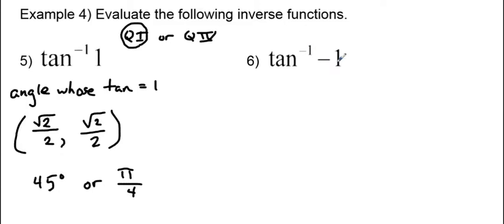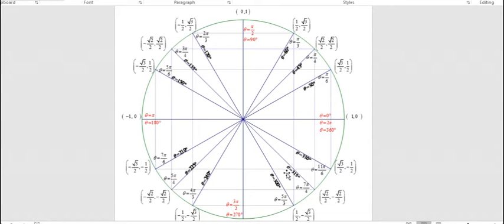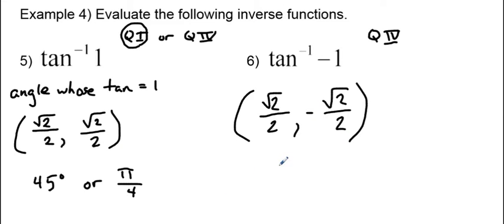Last but not least, the inverse tangent of negative 1. Again, that happens when the x and y coordinates are the same, but since this is negative, we have to be in quadrant 4 where the y coordinate is negative. Going back to the unit circle and looking for those coordinates, we see that happens at 315 degrees, which is the same as 7 pi over 4. So the answer is 315 degrees or 7 pi over 4.